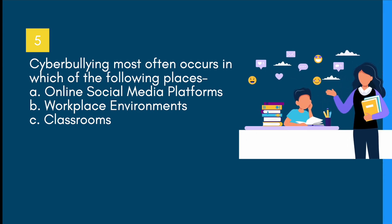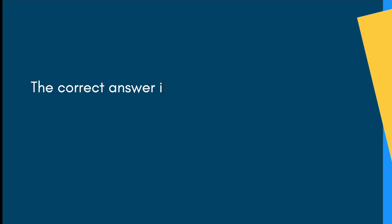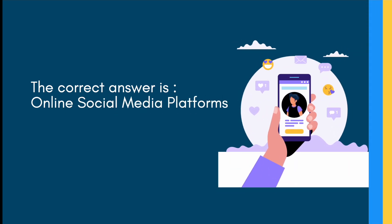Cyberbullying most often occurs in which of the following places? A) Online social media platforms, B) Workplace environments, C) Classrooms. The correct answer is: online social media platforms.